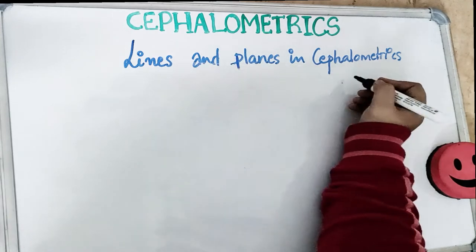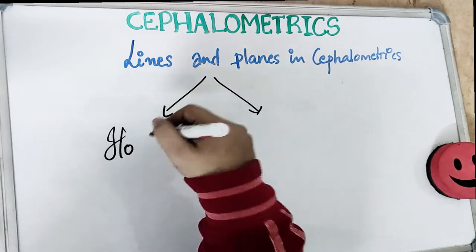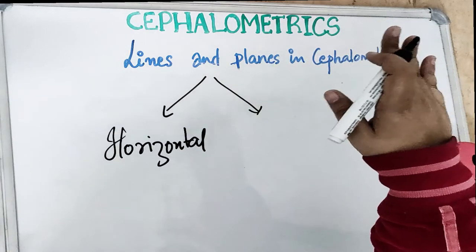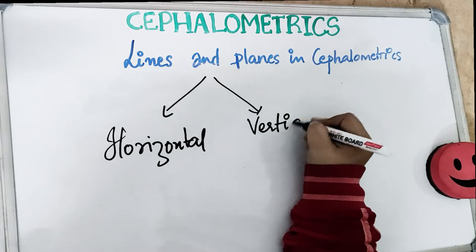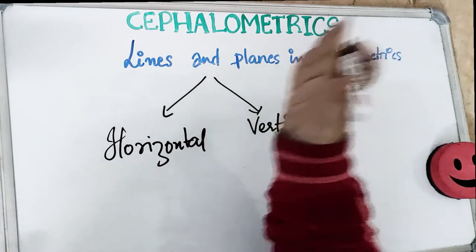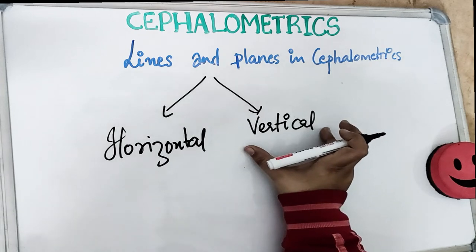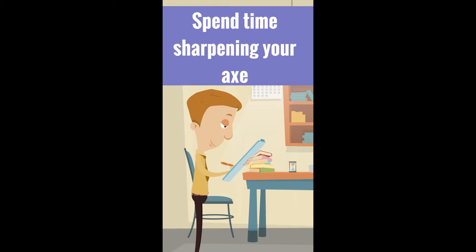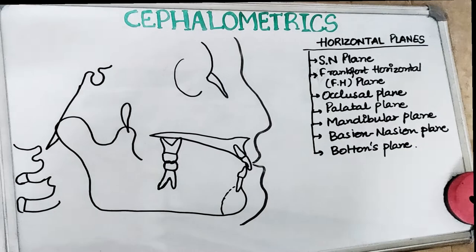Today's video will be discussing lines and planes in cephalometry. Based on the orientation of lines or planes, we can classify into two categories. The first one is the horizontal planes — lines which are parallel to the floor. We will be studying seven planes under this category. The other is vertical planes — lines placed perpendicular to the floor — and we will be studying four planes under this category.